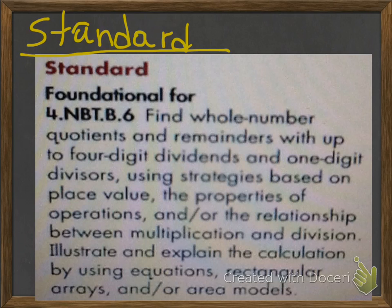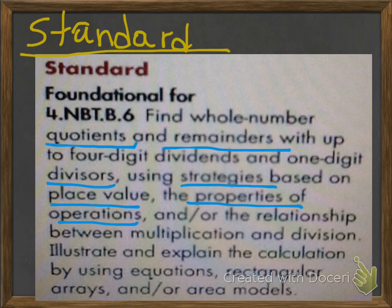Our standard is to find whole number quotients and remainders with up to 4-digit dividends and 1-digit divisors using strategies based on place value, the properties of operations, and the relationship between multiplication and division.